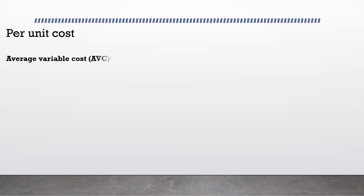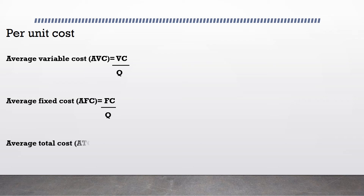It's also important to calculate per-unit cost. We have average variable cost (AVC), average fixed cost (AFC), and average total cost (ATC). For AVC, it's variable cost divided by quantity. For AFC, it's fixed cost divided by quantity. For ATC, it's total cost divided by quantity. Get used to these acronyms as we'll be using them throughout.